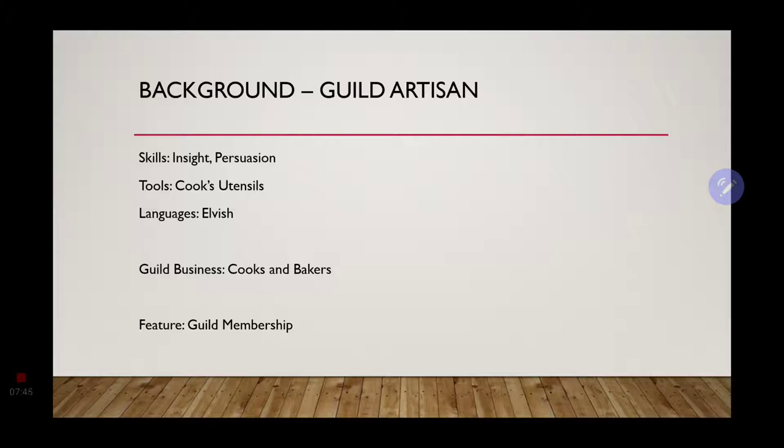For our skill proficiencies, we get insight and persuasion. You, again, know your food. You know what is best to go with this food. You know the back story of the different dishes. Anything that would go with food. For tools, we are using cook's utensils because we are cooks, we are the master chef. We have to know how to use cook's utensils. For language, we will just go with elvish, just because elves have been known to be gigantic snobs. And what better type of snob than a food snob. And that is Gordon Ramsay. Guild business, of course, is cooks and bakers.